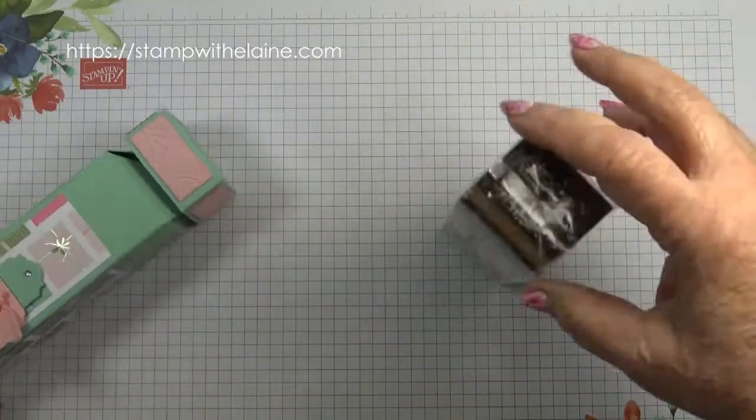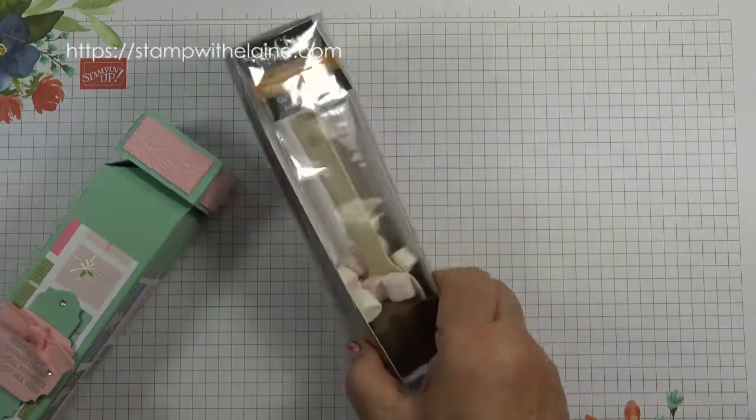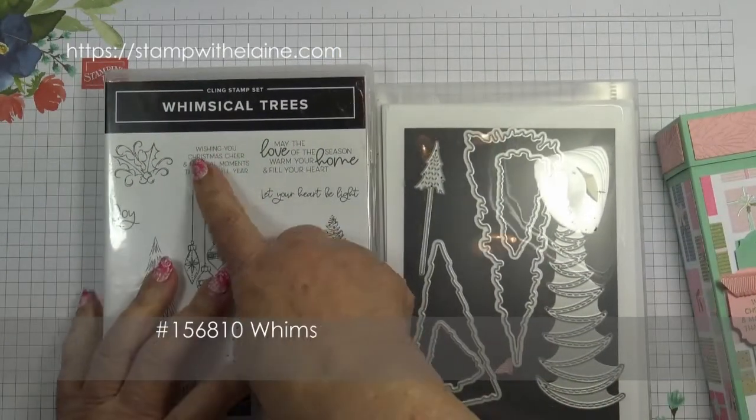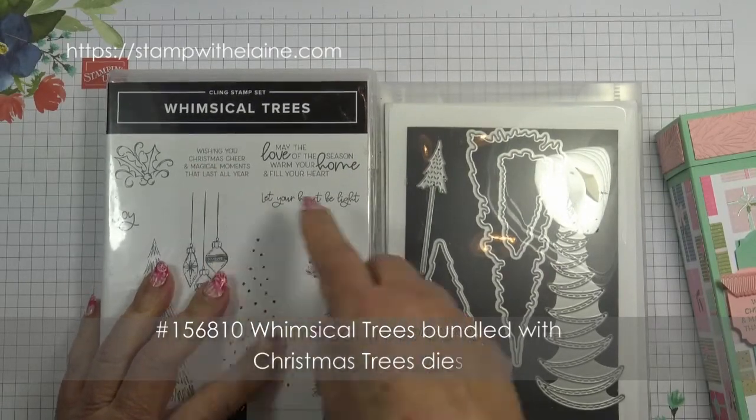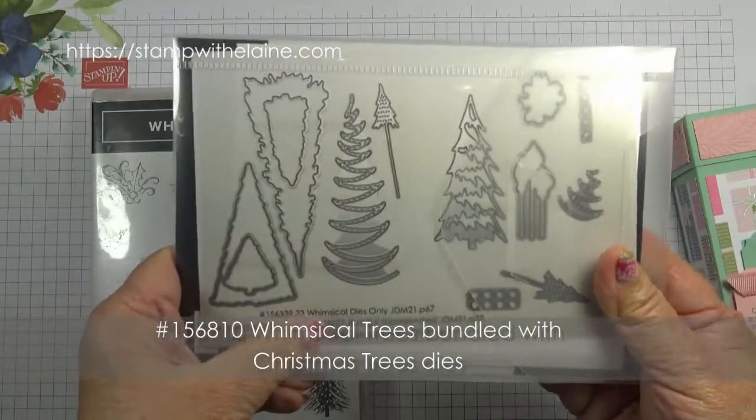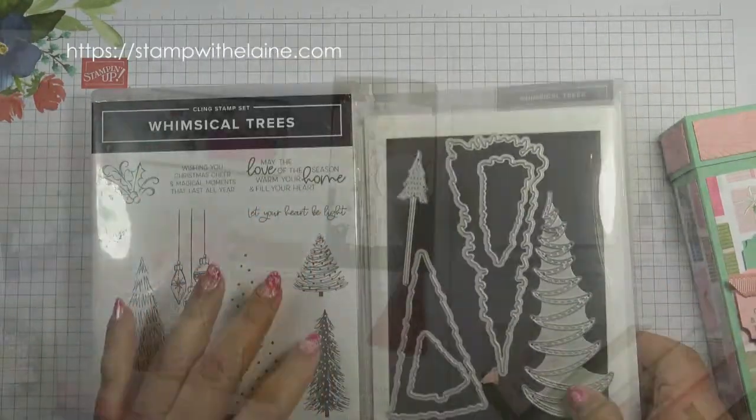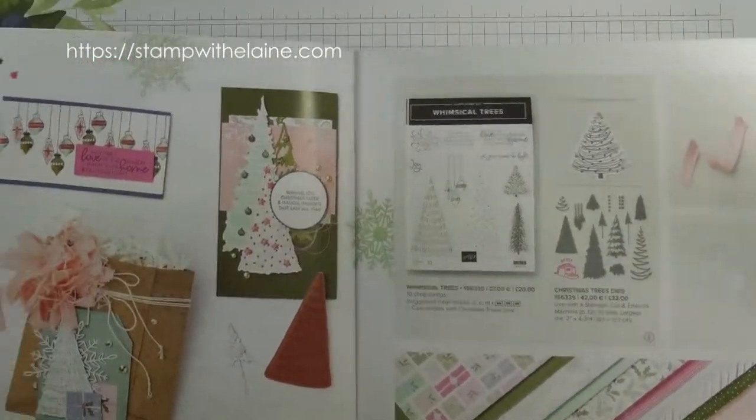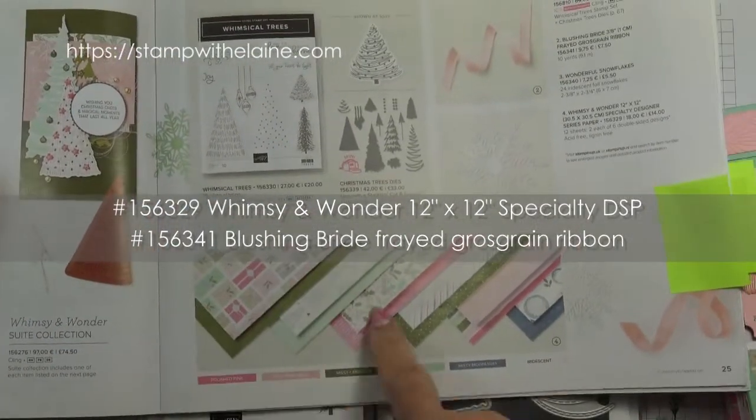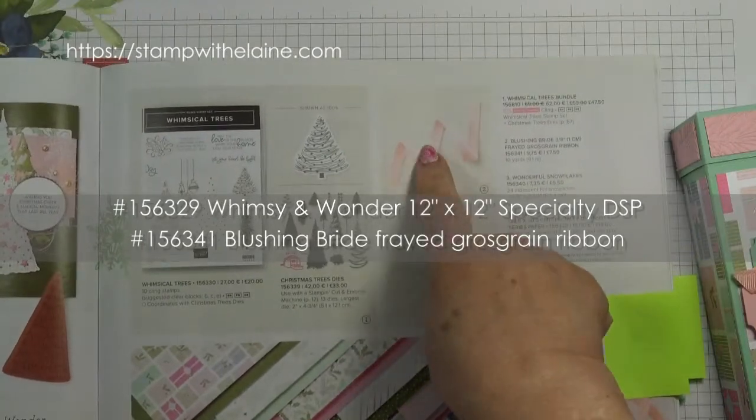It's these hot choccy dippers. I've used the sentiment from the Whimsical Trees stamp set. This is bundled with the Whimsical dies. This is part of the Whimsy and Wonder suite. We're going to be using the designer series paper and the ribbon.